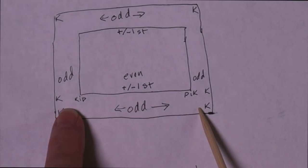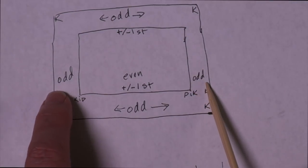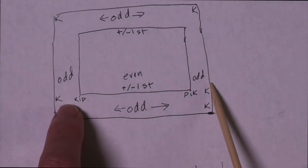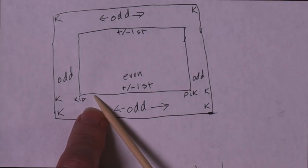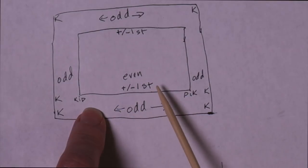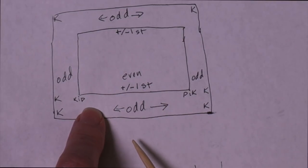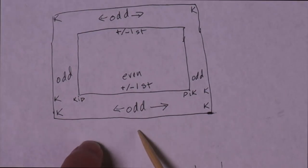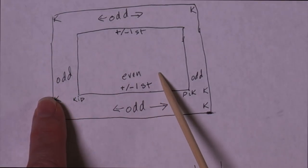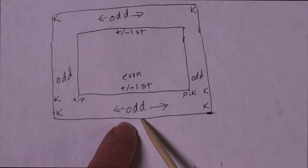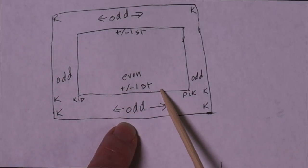That allows you to work your border by starting and ending with a knit, and it allows you to work the side borders starting and ending with a knit at both places. But what you do when you transition from your border to the main pattern in the middle — which has to have an even number of stitches — is that you increase or decrease. So if you were supposed to have 100 stitches across this section, you could cast on 101 stitches.